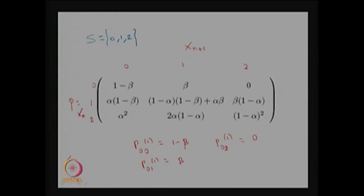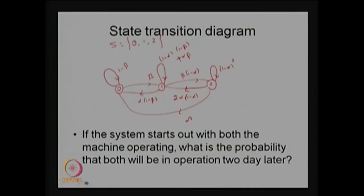This exercise was done in lecture 1. We also constructed the state transition diagram, which is equivalent to the one-step transition probability matrix.